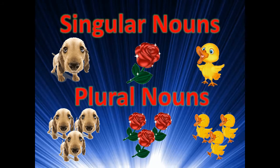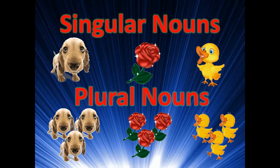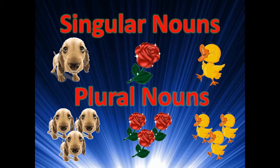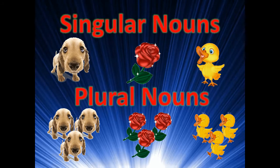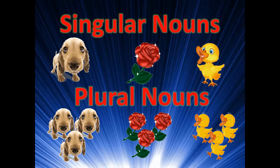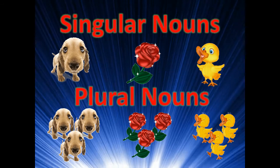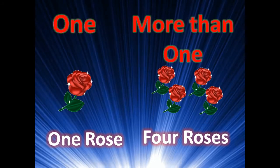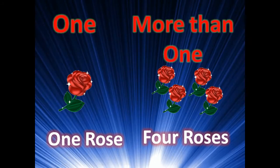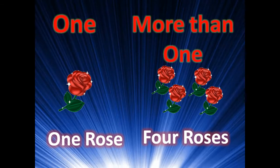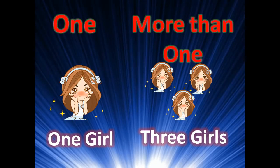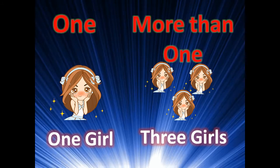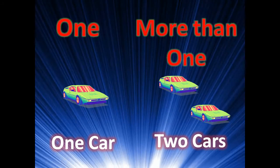How do you change singular to plural? By adding S. One rose, four roses — we add S. One girl, three girls — we add S. One car, two cars — we add S.